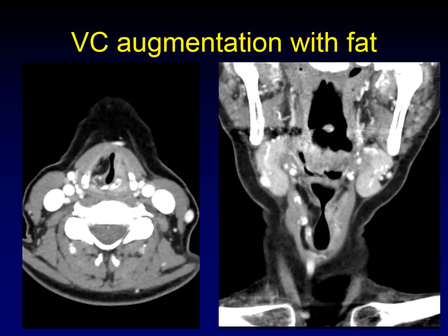But this is not a lipoma — this is surgical augmentation of the vocal cord with fat injection. The coronal view gives a better sense of how the entire vocalis muscle has been replaced by fat, which has extruded a little into the supraglottis as it was injected. Several different materials can be used to augment the vocal cords: Teflon was used for a long time until it was found to induce an inflammatory reaction. Hydroxyapatite has been used, silicone is now probably the most popular, but the patient's autologous fat is sometimes used, as in this case.